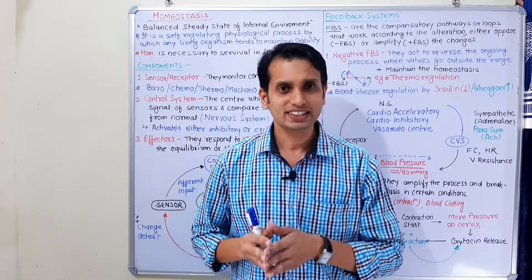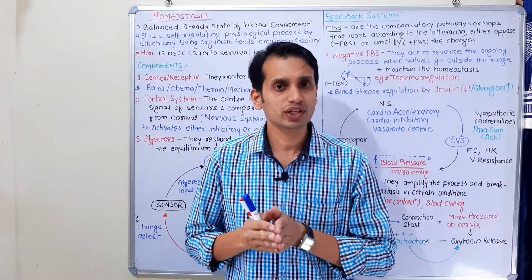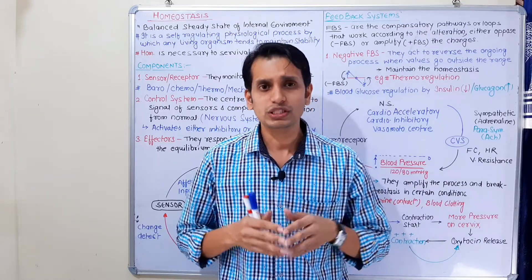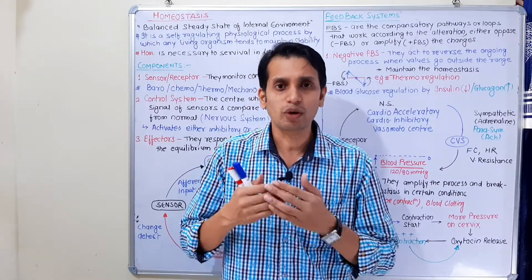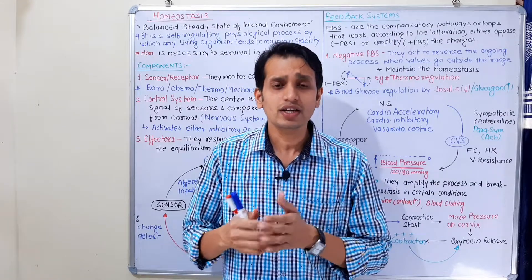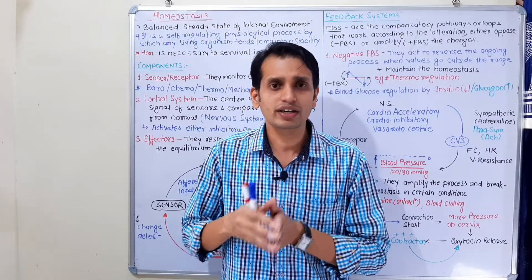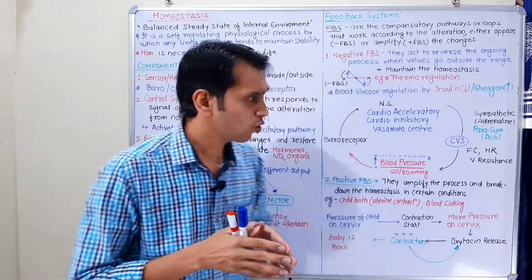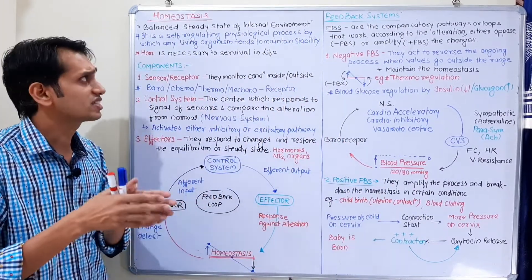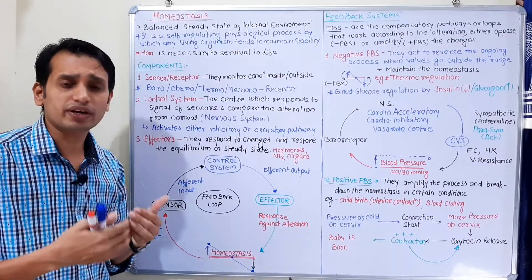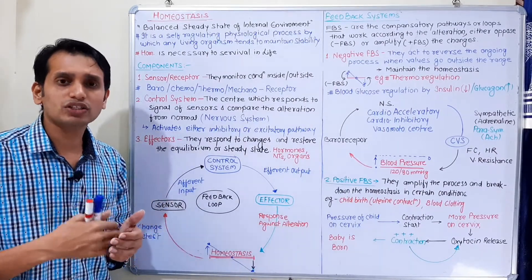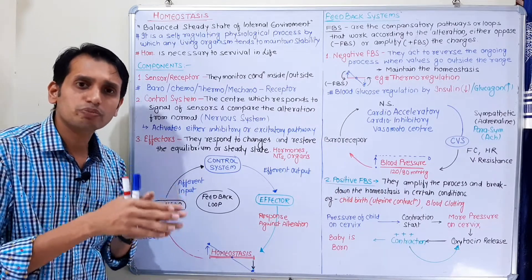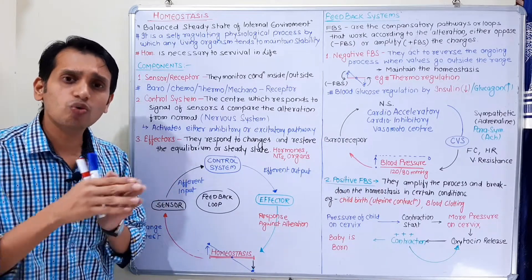So, homeostasis — basically 'homeo' means homogenous and 'stasis' means steady state. Homeostasis means a balanced steady state of the internal environment, defined within a narrow range. Our basic physiology is fixed and operates within that range.